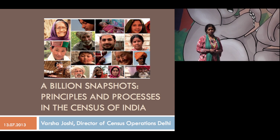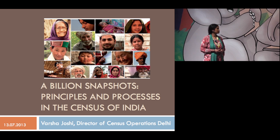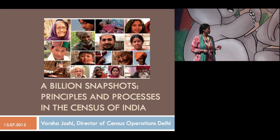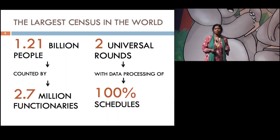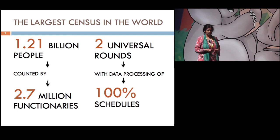Plus, we have two full rounds. The first round is the house listing, the second round is the population enumeration. Two full rounds in which enumerators go house to house all over the country. And the entire data collected in these two rounds is fully processed, 100% of the questions, 100% of the schedules are processed to yield the census results.